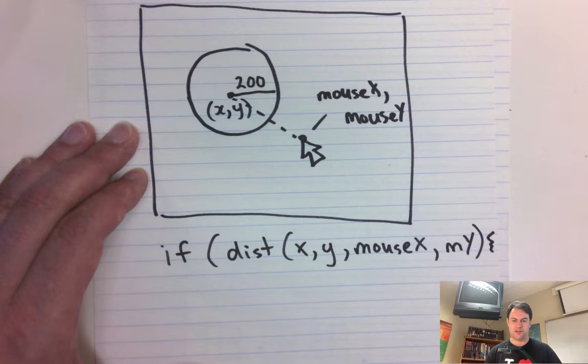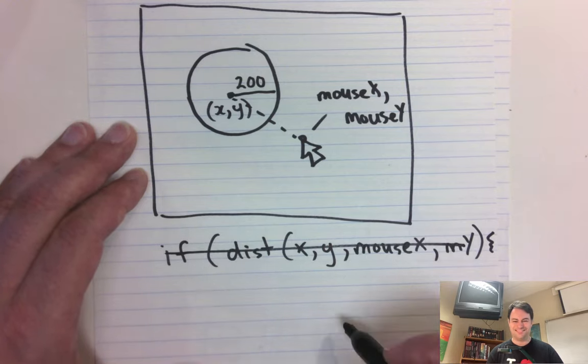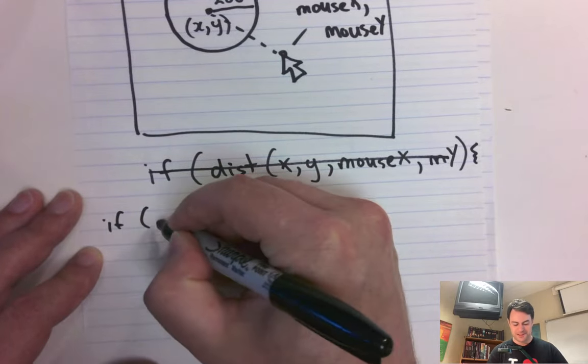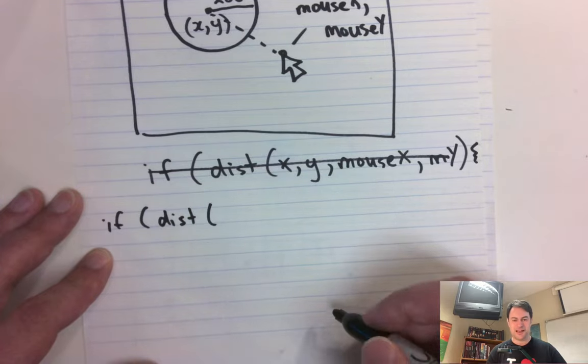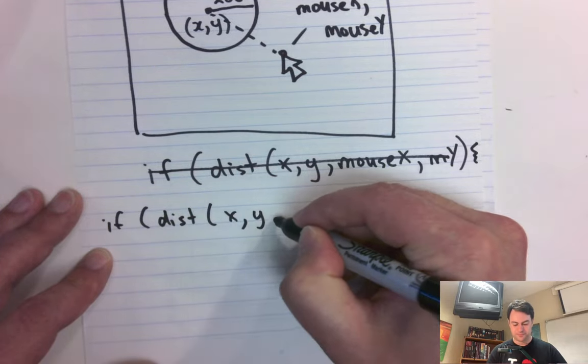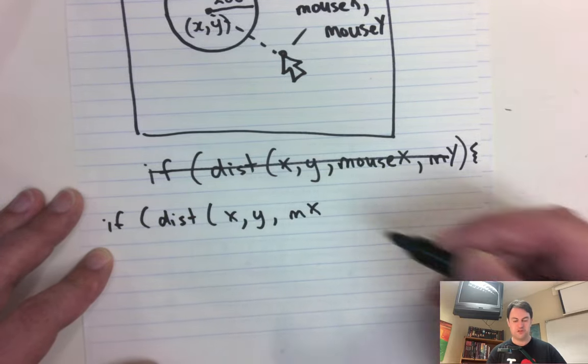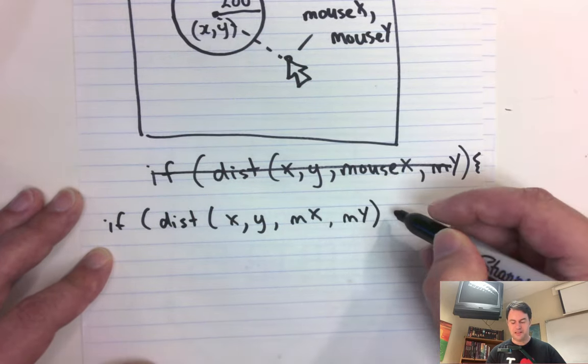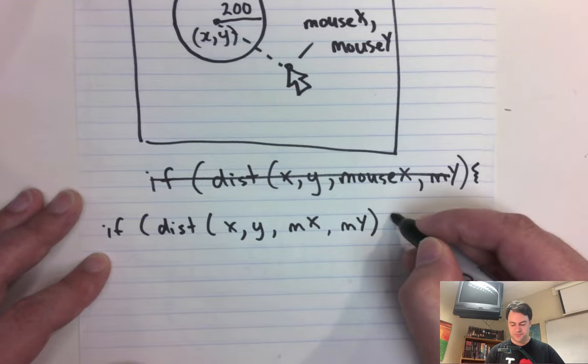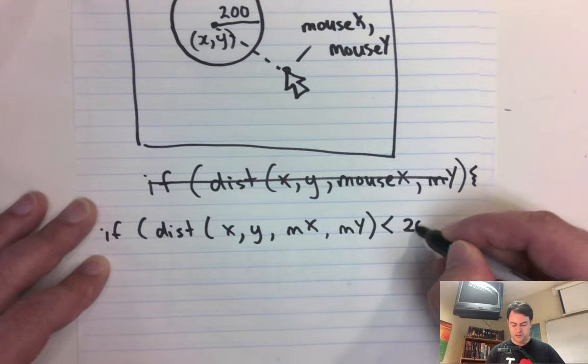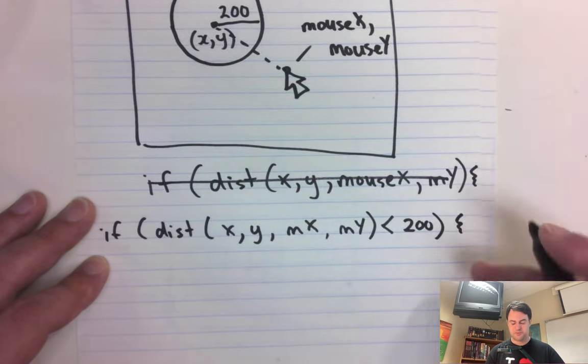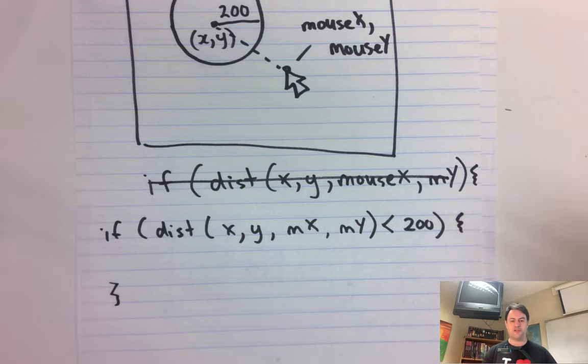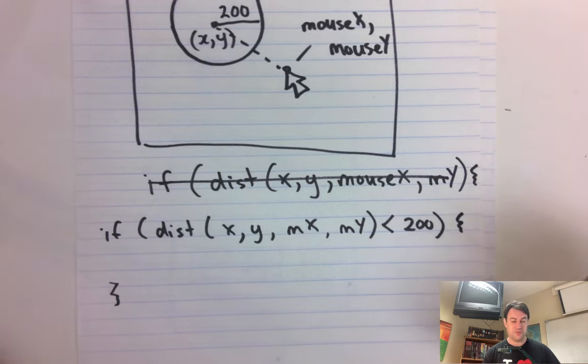Oh wait, we're not done. Let's check in. If the distance between x and y, and mouse x, I'll just use mx, you should use mouse x, mouse y, is less than our radius. So less than, in this case would be 200. Then we know something is going on. We know that the mouse is inside.